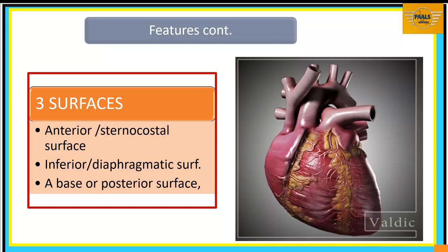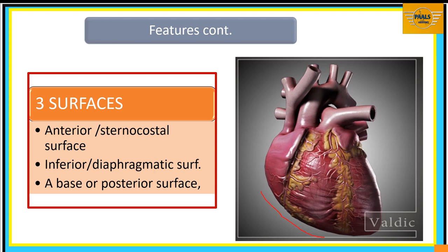We have three surfaces. The first is the anterior surface — the surface relating to the sternum and the costal cartilages, also called the sternocostal surface. We also have the diaphragmatic surface, or inferior surface, which is the area that relates with the diaphragm. Finally, we have the posterior surface, also called the base — the part that we see when the heart is viewed from the posterior end. These three surfaces are the anterior, the inferior, and the posterior, also known as the base.